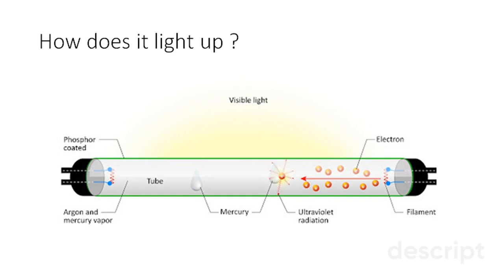The ballast feeds the electricity into the pins of the fluorescent bulb on both ends. Then after the electricity enters through the pins, it flows to the electrodes inside the sealed glass tube which is kept under low pressure.